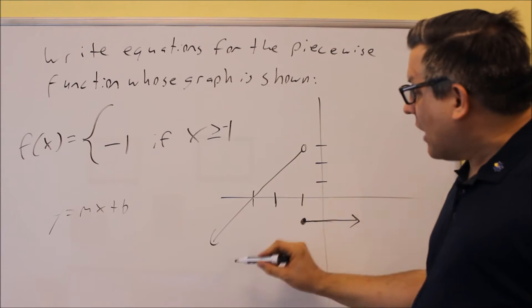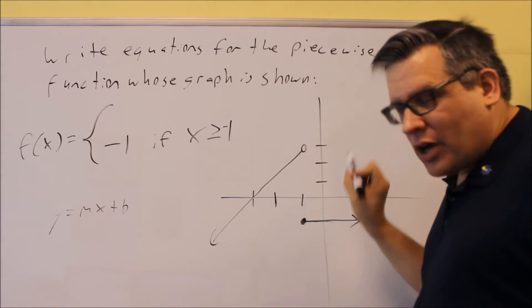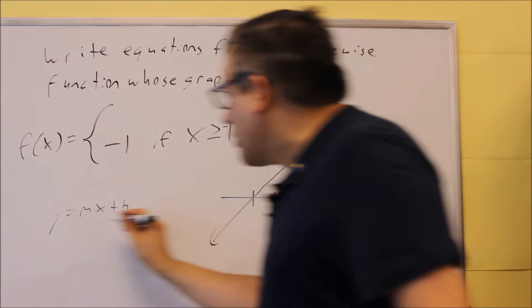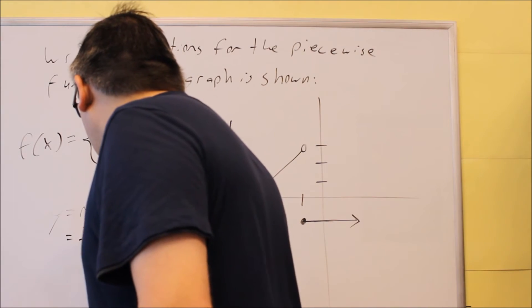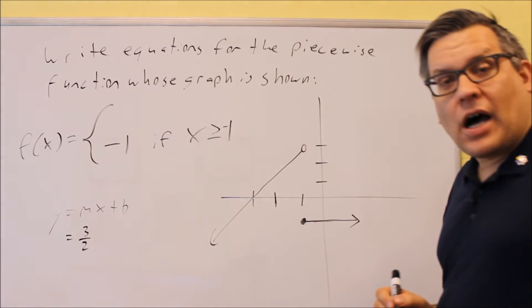So that would be a positive slope. Any line that slants to this direction would be a positive slope. So therefore, I know that I have a slope of positive 3 halves.